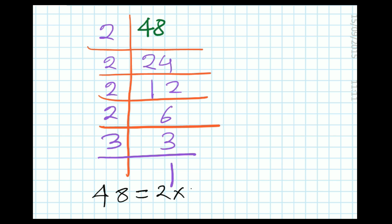So we can write 48 equal to 2 × 2 × 2 × 2 × 3. This is the prime factorization of 48 using the division method.